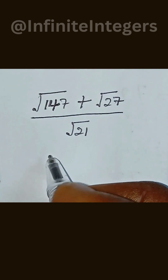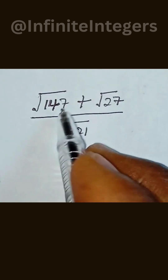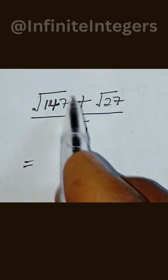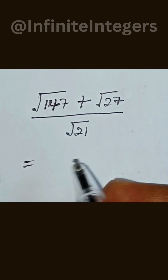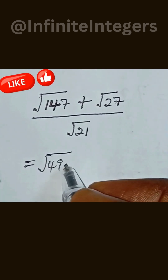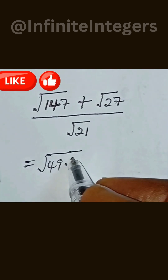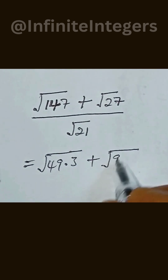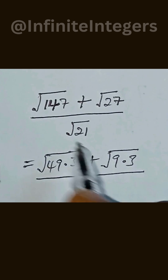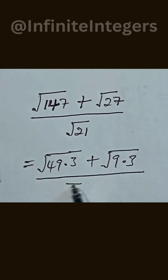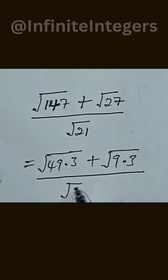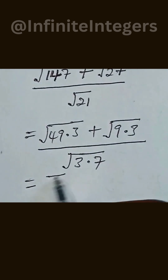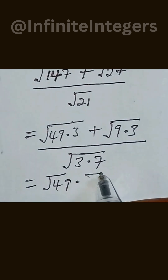We need to simplify this radical expression, so we have to simplify each radical. The numerator can be simplified as square root of 49 multiplied by 3, plus square root of 9 multiplied by 3, and the denominator can be simplified as square root of 3 multiplied by 7.